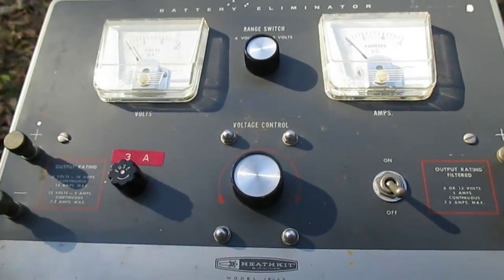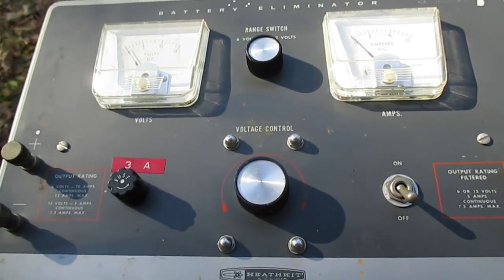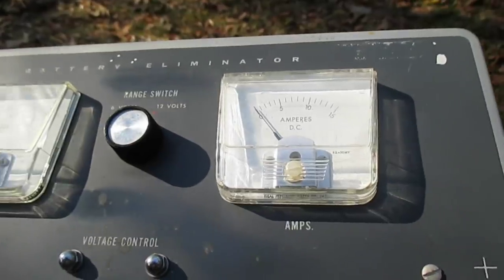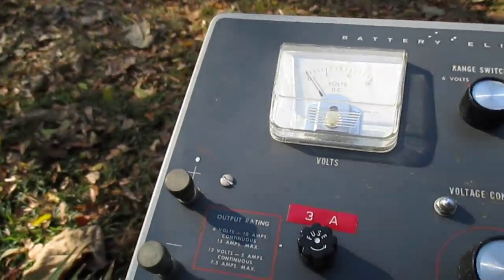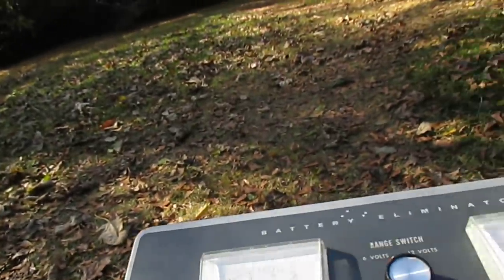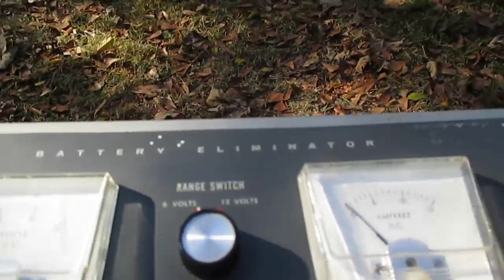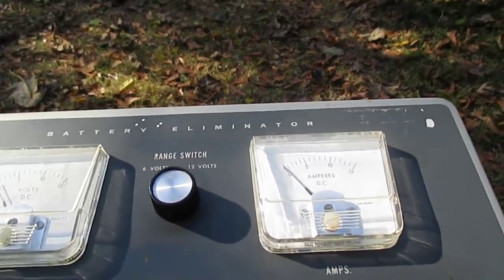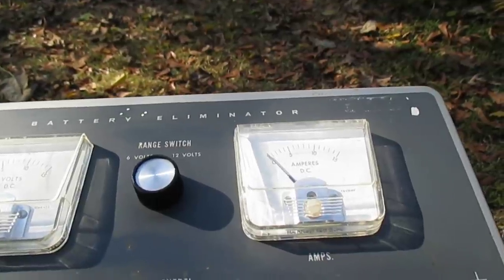This is what we have, a Heathkit battery eliminator model IP12. I think it's probably a little bit newer than the other one. He repainted the case. There's a little dent here on the side but he mentioned that in the description, so that's no big deal anyway.